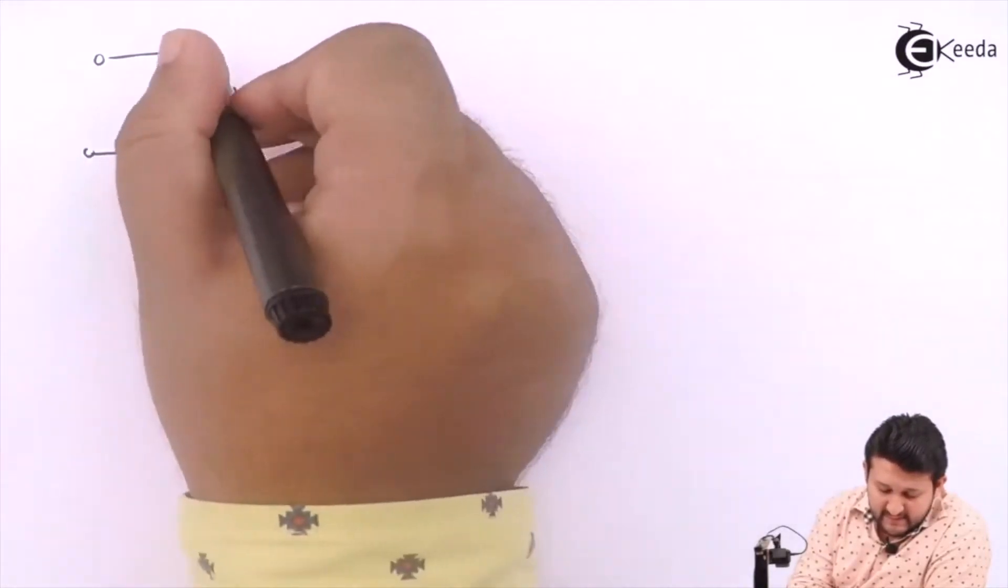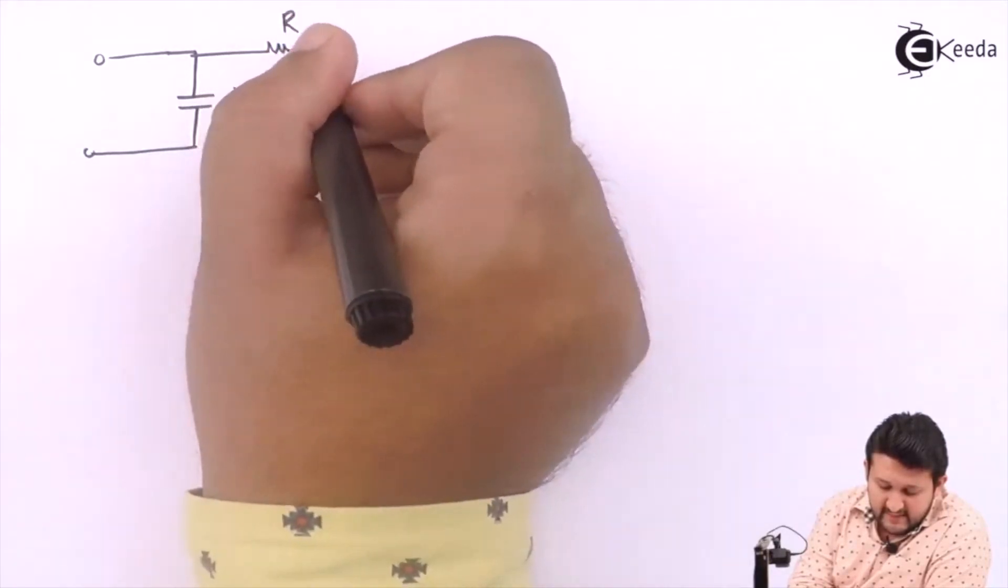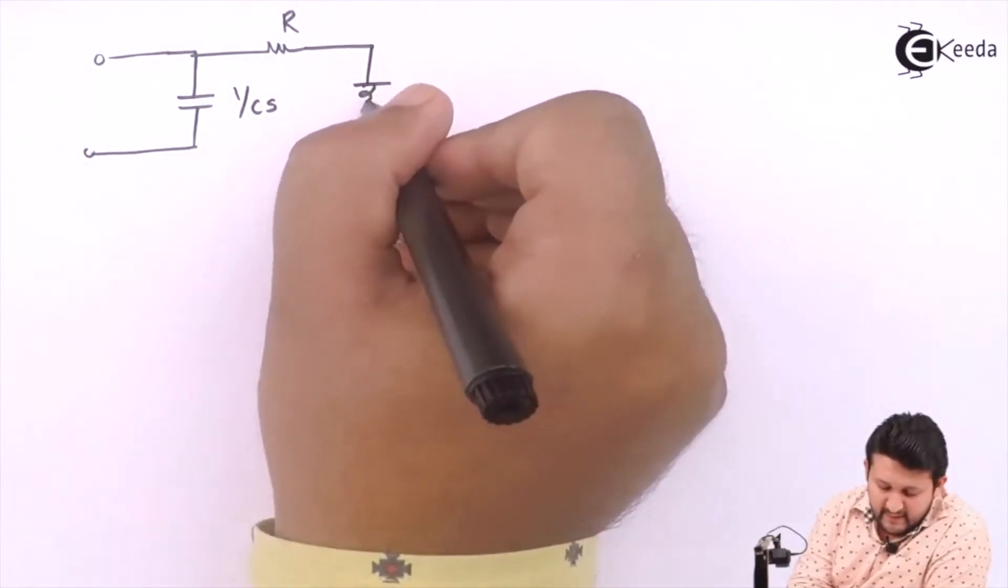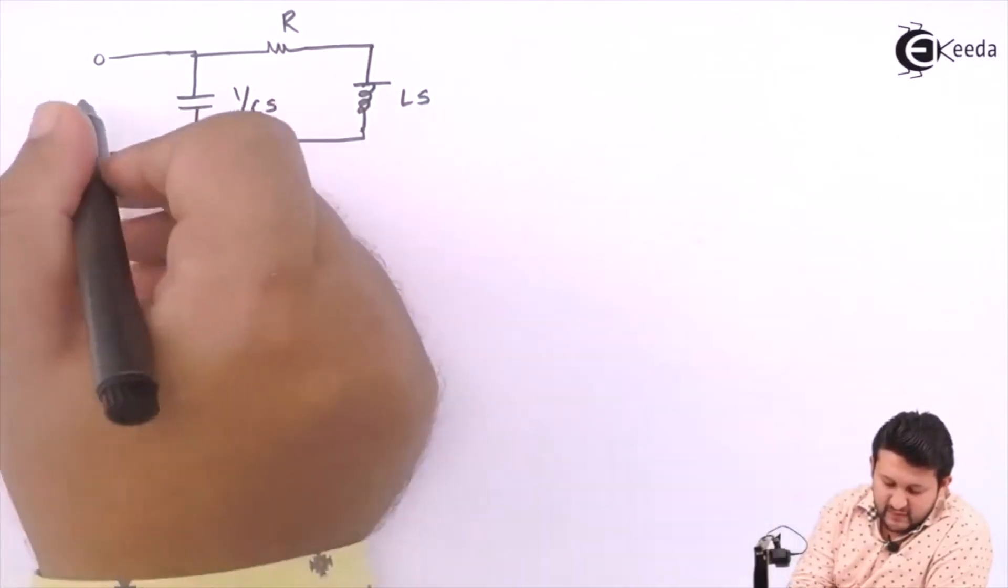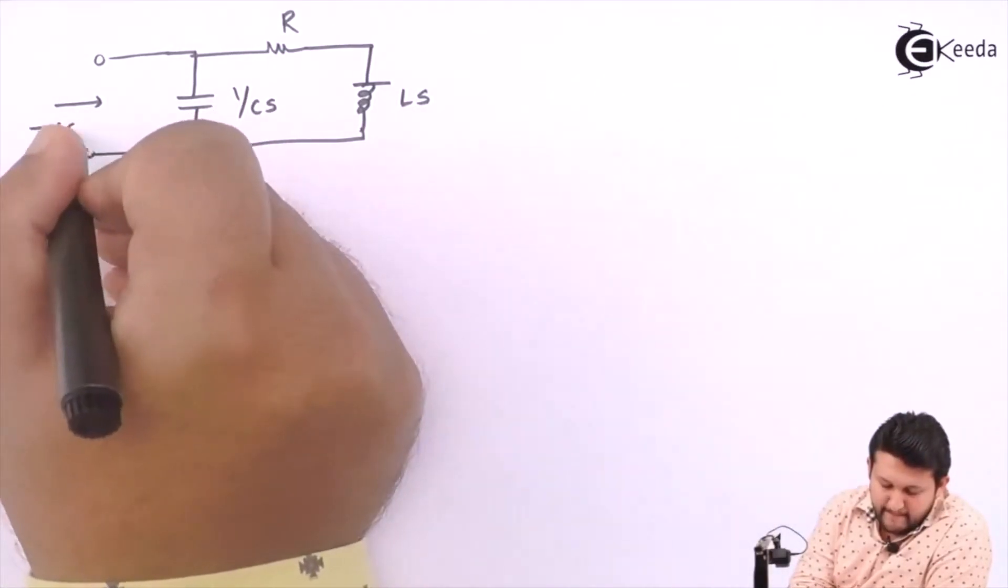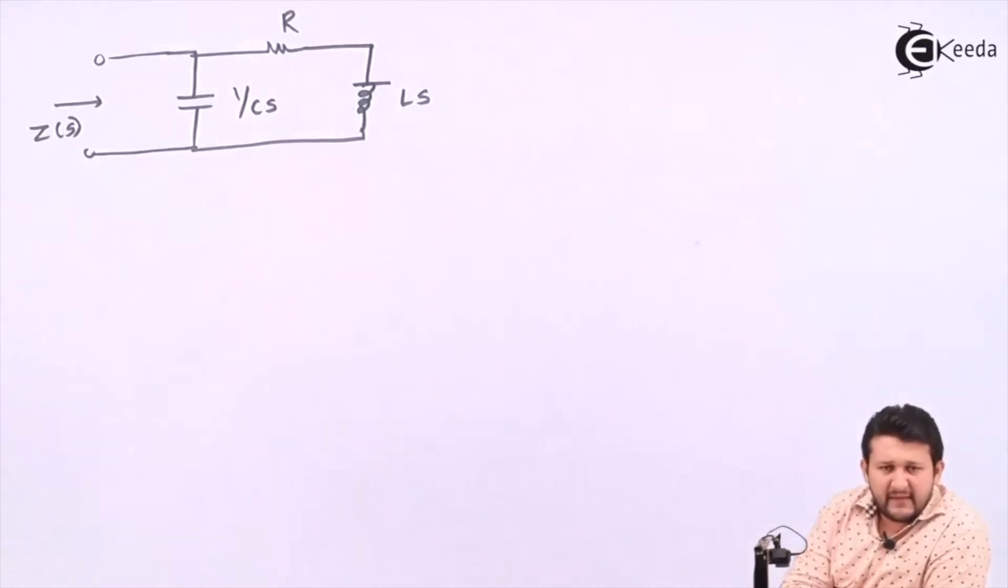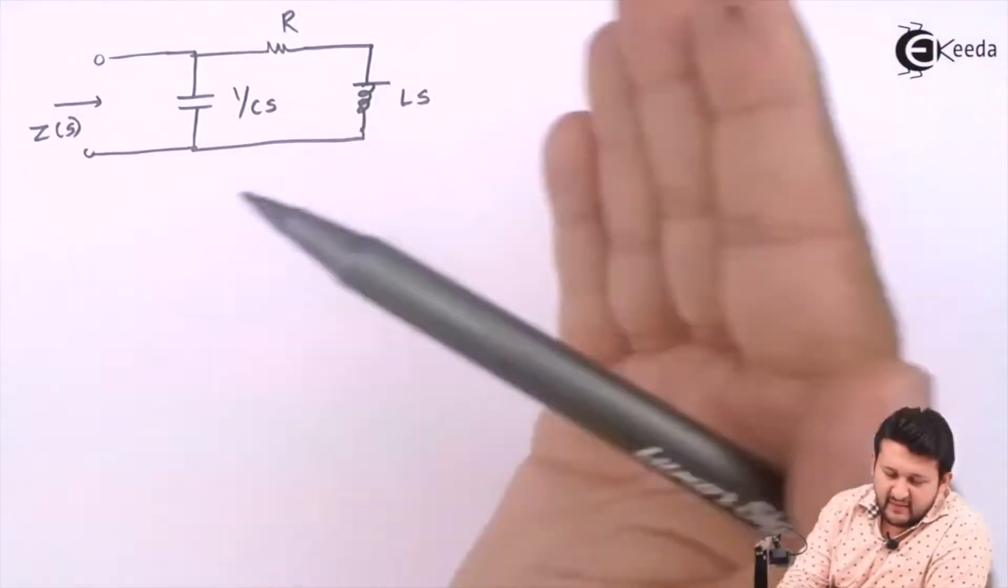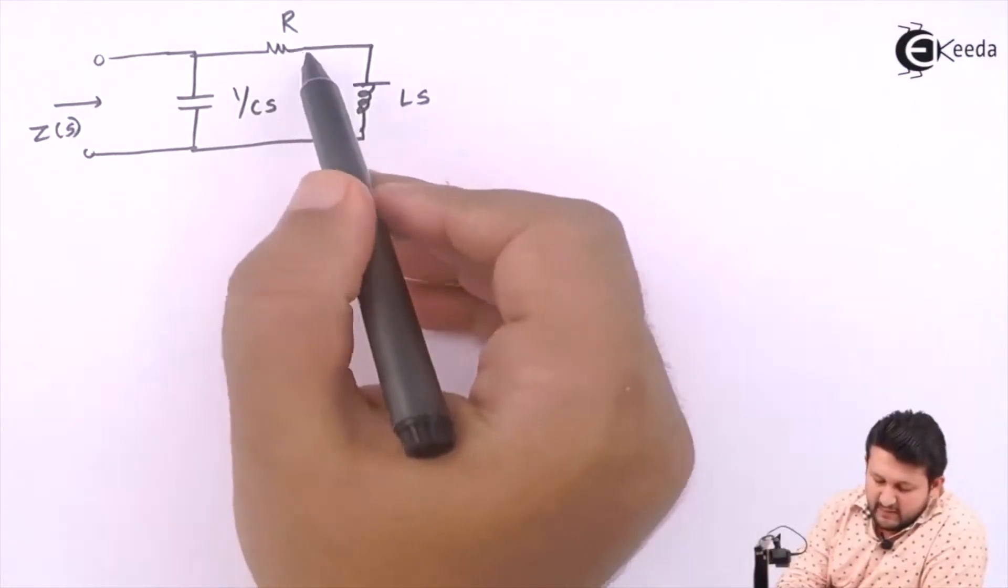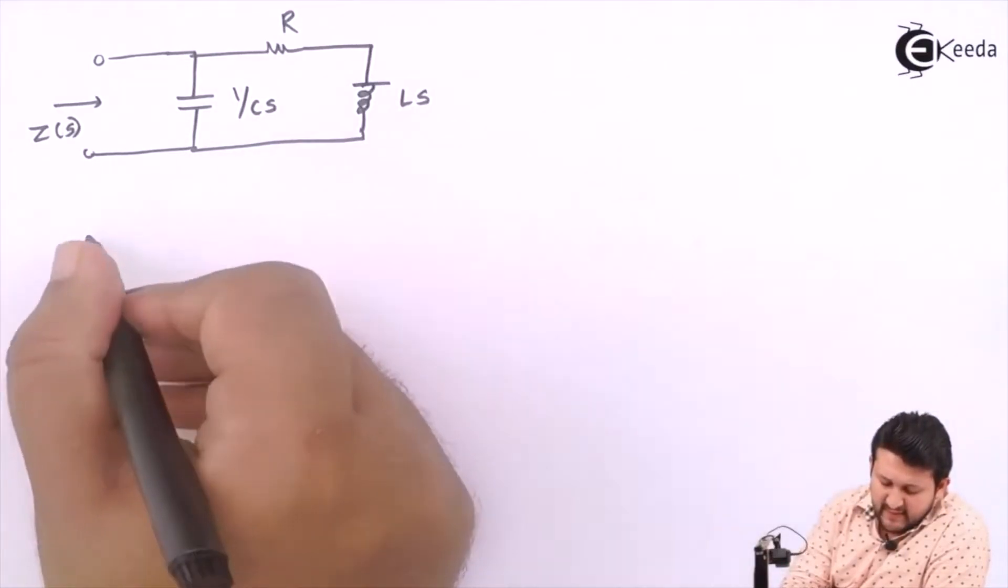So I need to find Z of s by using parallel combination. From right, shift it towards left. Reduce the network. These two things are in series, add them. These two are in parallel, simplify it.